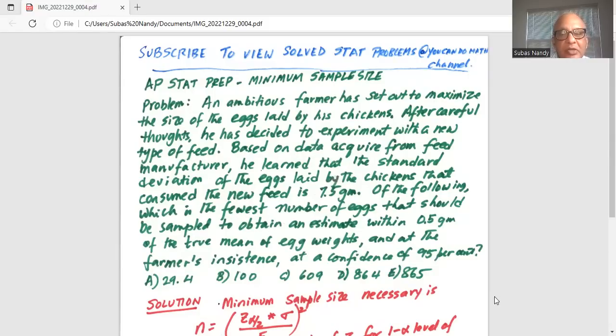Which is the fewest number of eggs that should be sampled to obtain an estimate within 0.5 gram of the true mean of egg weights at the farmer's insistence at a confidence of 95%? Okay, so there are five options.